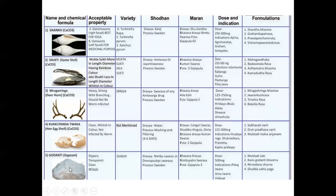Then Godanti, that is gypsum. This is slippery, transparent, clean and whitish. Godanti Bhasma is very popular among Ayurvedic Vaidyas. Shodhana is done with Dravya Nimbuswaras or Drona Pushpi Swaras — Swaras is fresh juice; process is Svedana. Marana done with Bhavana Dravya Nimbupatraswaras and Gajaputa — don't forget this combination for Marana purpose. Dose is 500 milligram. Indications: Pitta Jajwara and Jirnajajwara — chronic fever, pyrexia of unknown origin (PUO). Formulations: Muktadi Vati, Kasis Godanti Bhasma, Nirvedana Churana, and Shuddha Shakta Yoga.